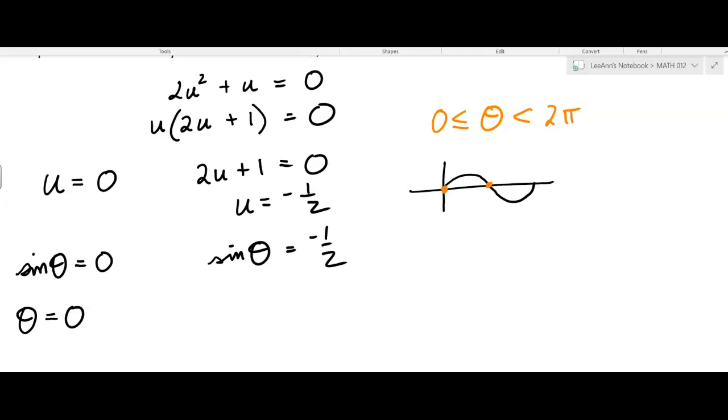And then what about down here at two pi? Well, it equals zero there, but two pi is not in the domain, so we don't get to include that point. Okay, so just the zero and pi.